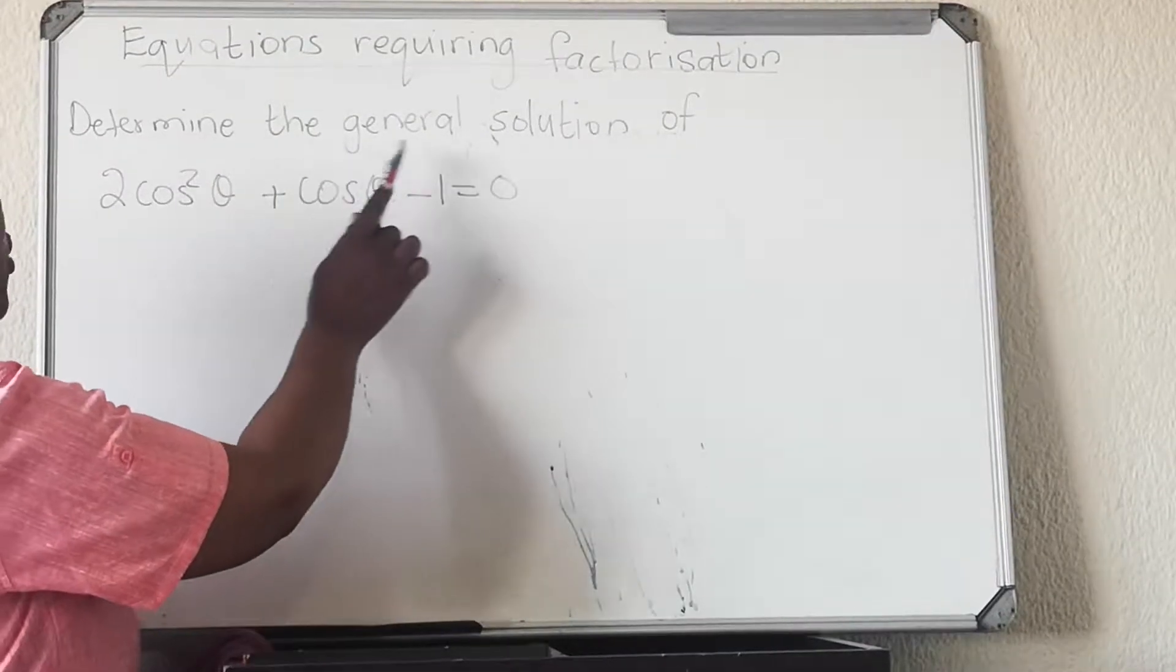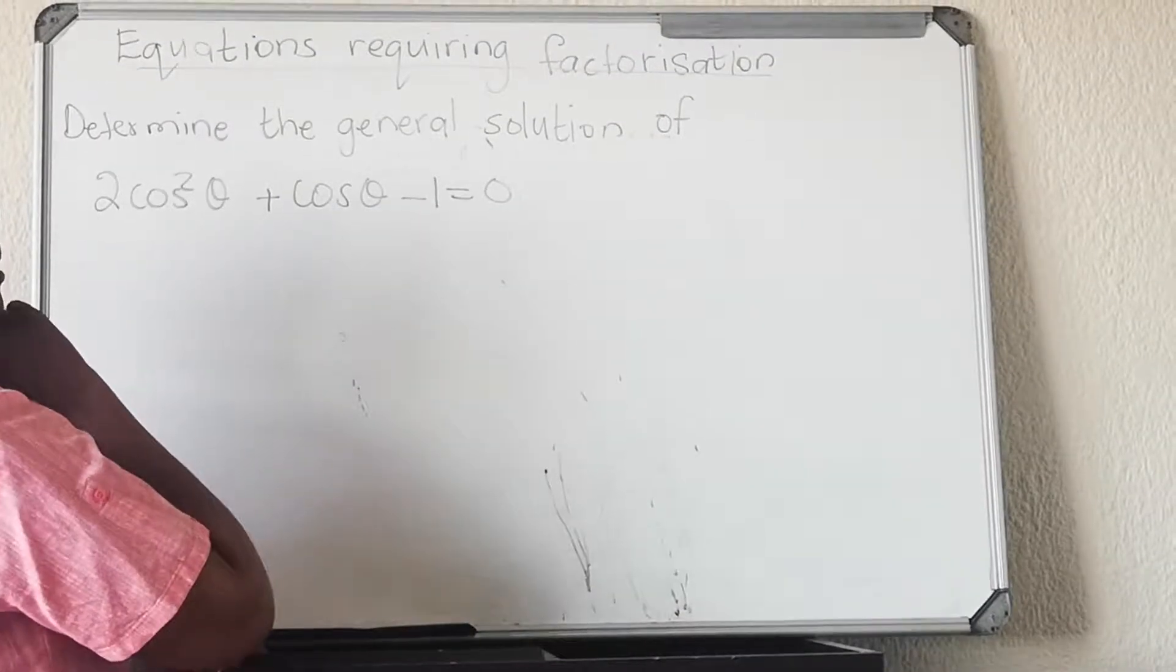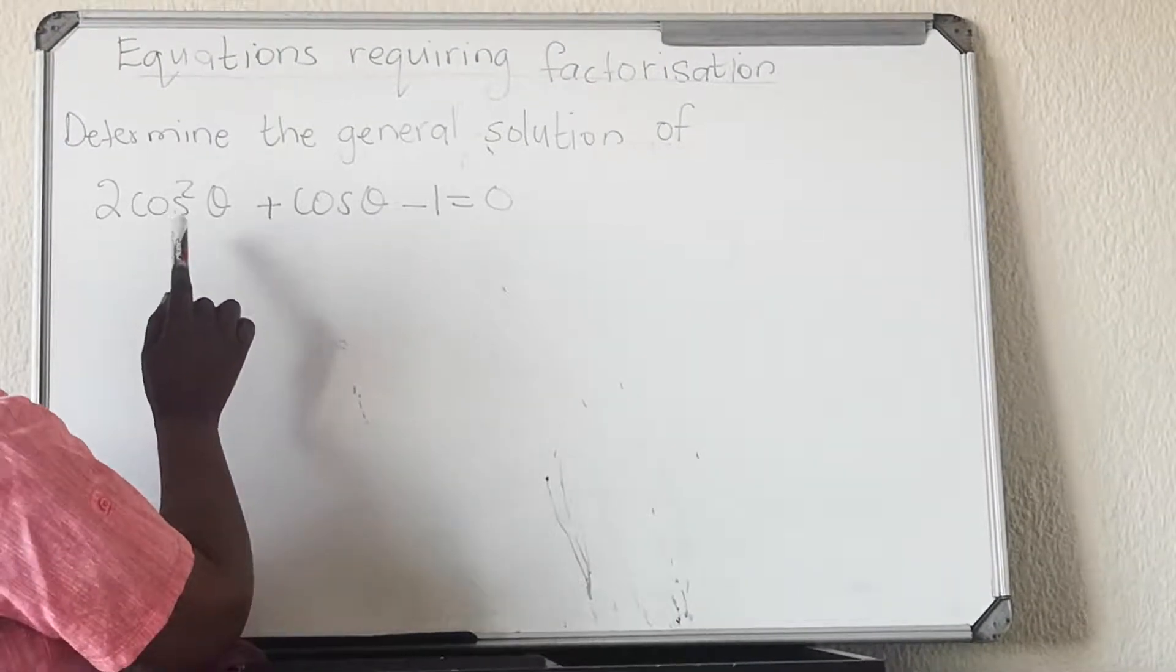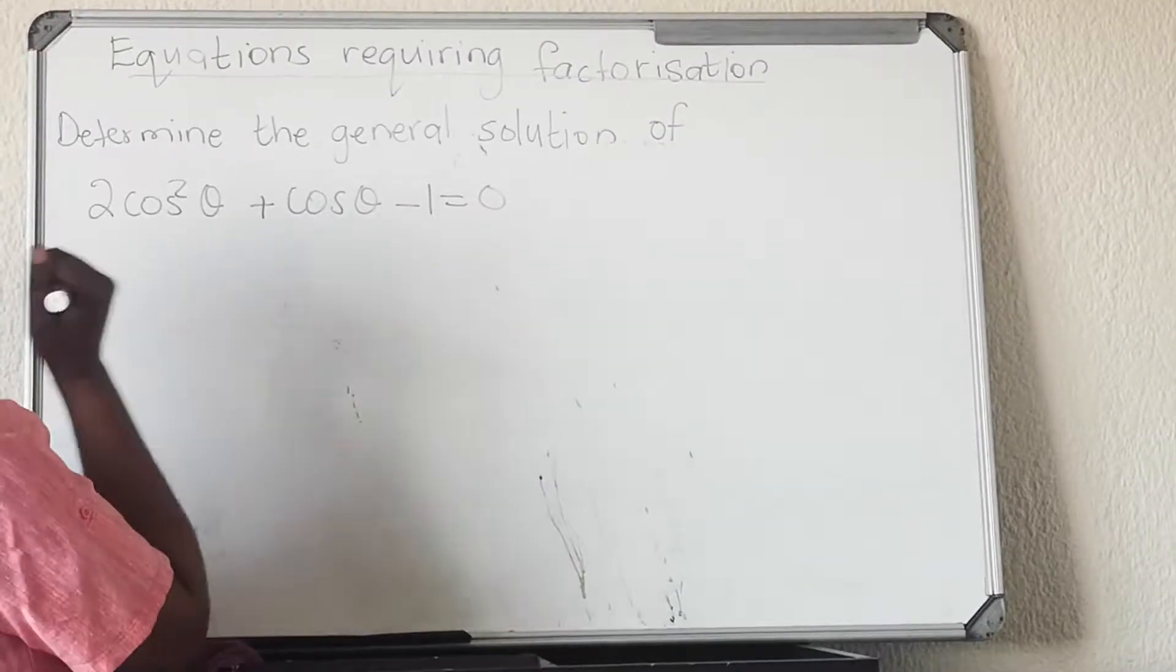The first thing that you look at is: do you have the same trig ratio? The question will come saying 'determine the general solution of the equation.' You look at, do I have the same trig ratio? Do I have cos and cos? I don't have the other trig functions. In this question it's correct.